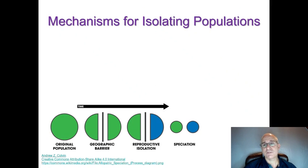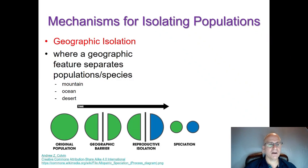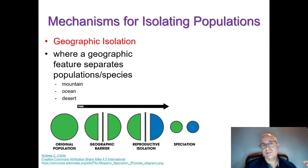So the mechanisms for isolating populations — there are three we're going to talk about here. The first is geographic isolation, which we've been talking about, where some geographic structure or feature separates the species. It might be a mountain, an ocean, a desert, or a glacier during an ice age. All of these can keep the population split up long enough that they accumulate different mutations and become different species. When populations are separated by a geographic feature, that's called geographic isolation.